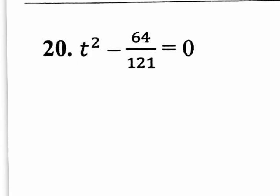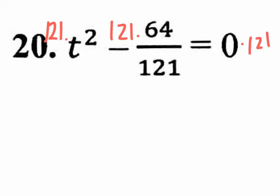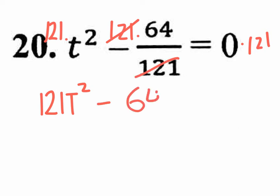Jumping to number 20 — the problem here is you have a fraction. How could you get rid of a fraction? By multiplying everything by the denominator. So if you multiply everything by 121, you'll be rid of that fraction. 121 times T squared is 121T squared. 121 times 64 over 121 cancels out, so you have minus 64. Zero times 121 is still zero. So what we have now is a difference of two squares.